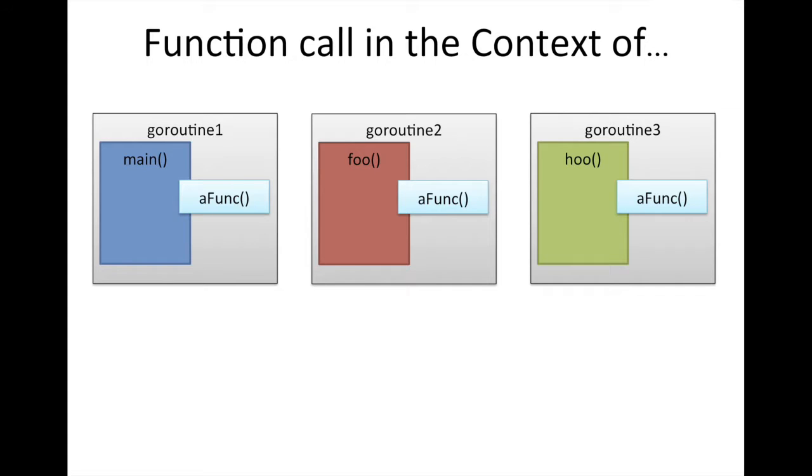Meaning that if there's some kind of side effect or dependency between each call of aFunc having to depend on a previous call, because you can imagine when aFunc is called in the context of goroutine1, and then it's called again in the context of goroutine2, if there's some dependency between different calls of aFunc on a previous call, then you can have a lot of issues.